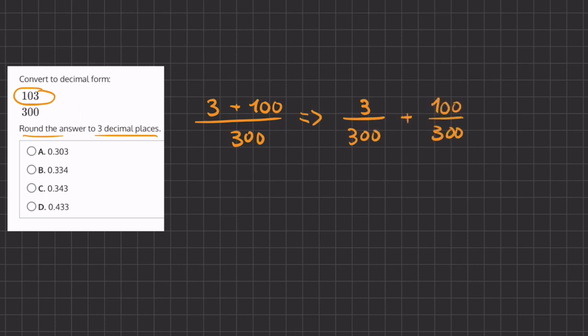And now we can take these two fractions and simplify them. If we divide 3 over 300 by 3, they're both equally divisible, so we're going to have 1 over 100. Plus, we're going to cancel out these zeros and we are going to be left with 1 over 3.